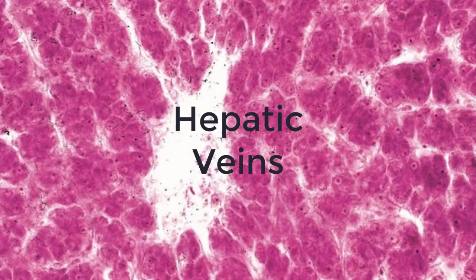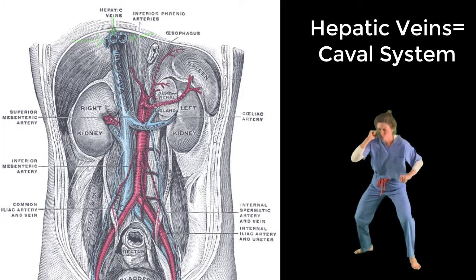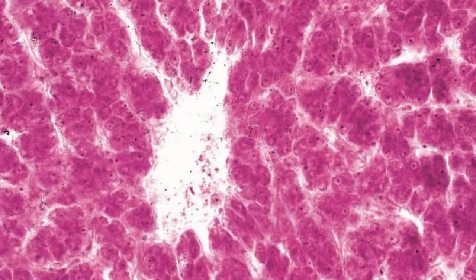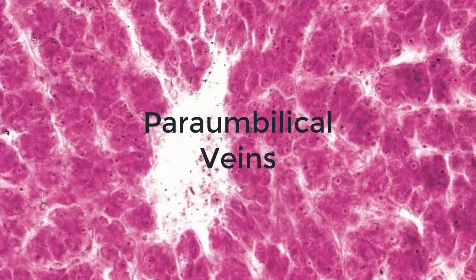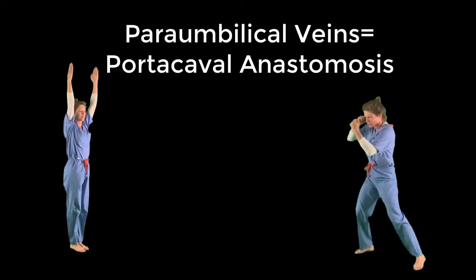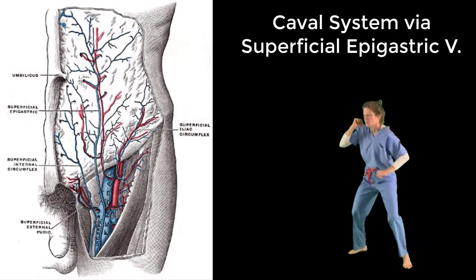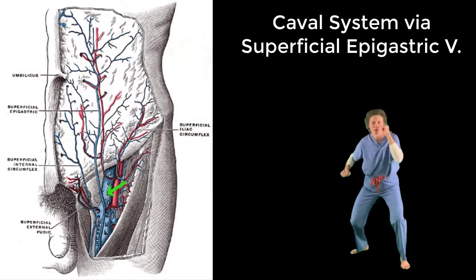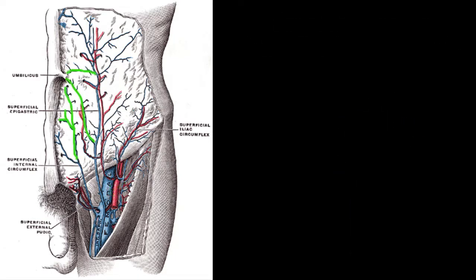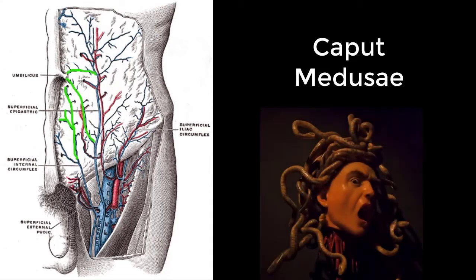Hepatic veins — these three veins drain the liver, so they are part of the caval system. And lastly, the paraumbilical veins represent another area of portacaval anastomosis. These veins can drain into either the portal system or the caval system, draining into the caval system via the superficial epigastric vein. Dilation of these vessels results in a condition known as Caput Medusae, because the engorged veins radiate out from the umbilicus in a fashion that resembles Medusa's head of snakes.